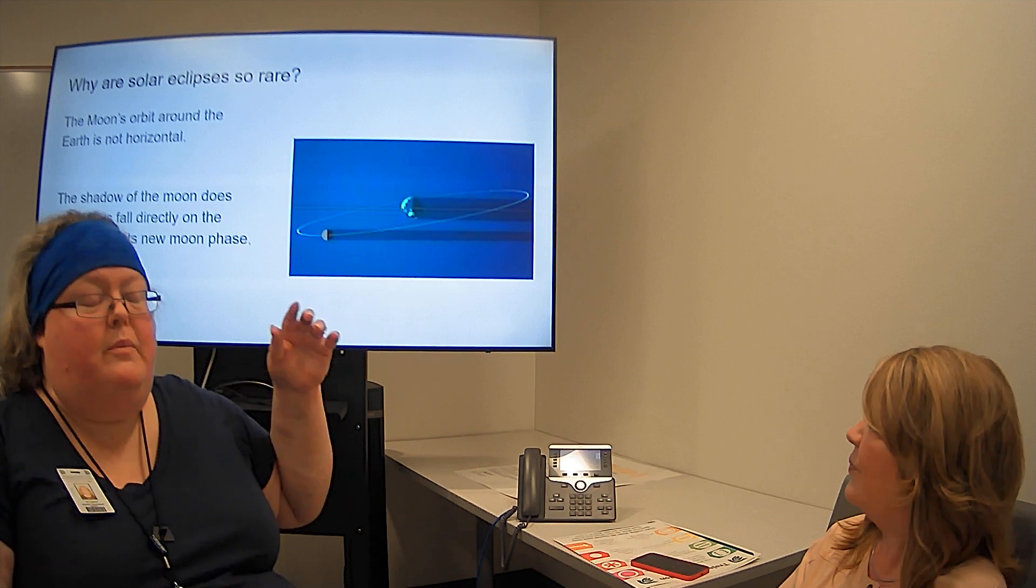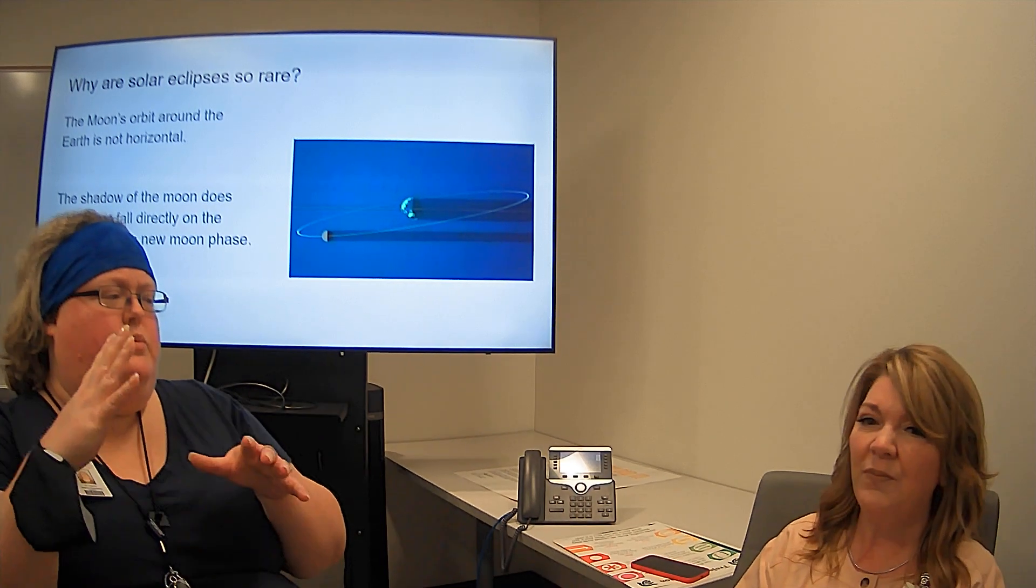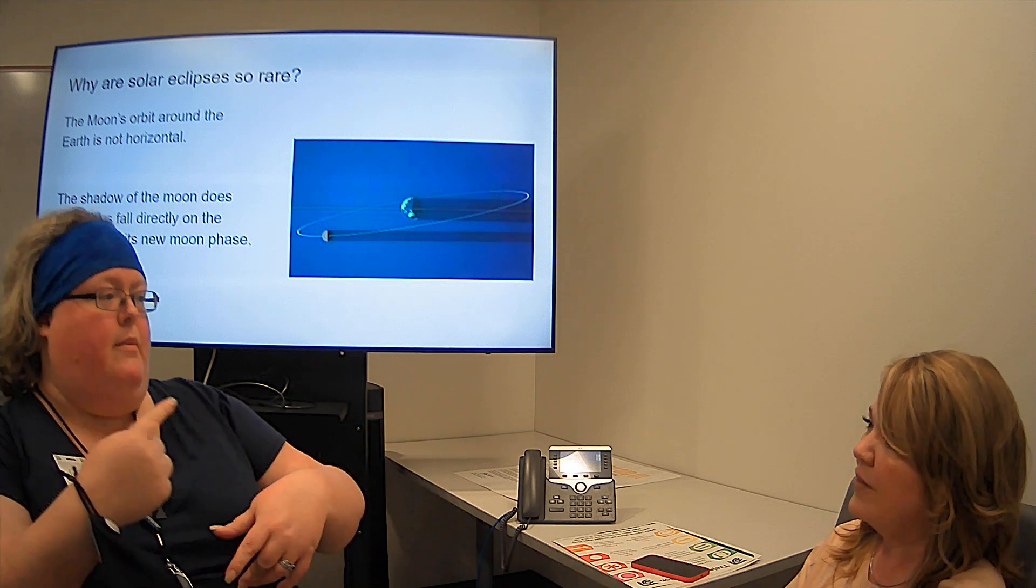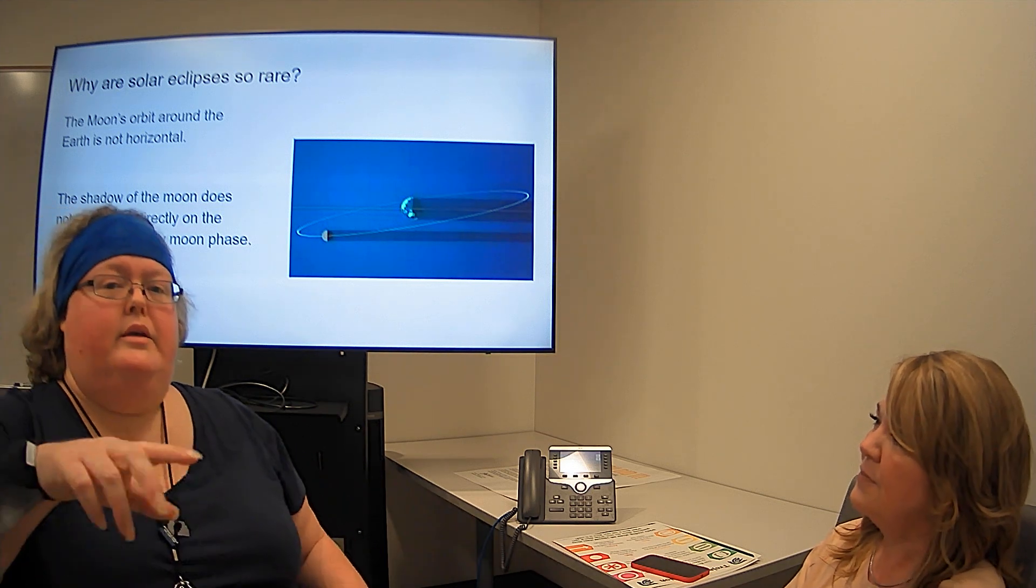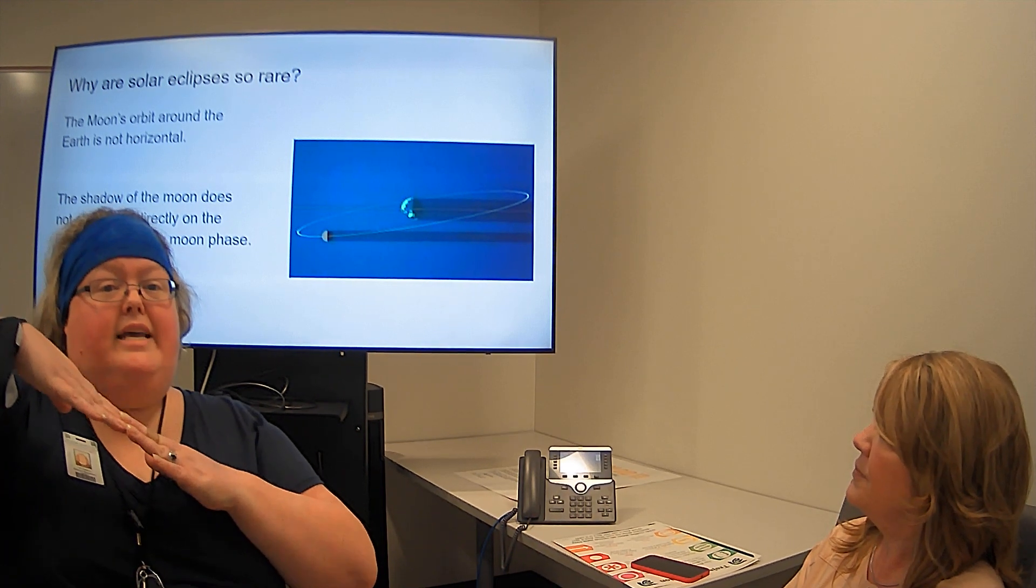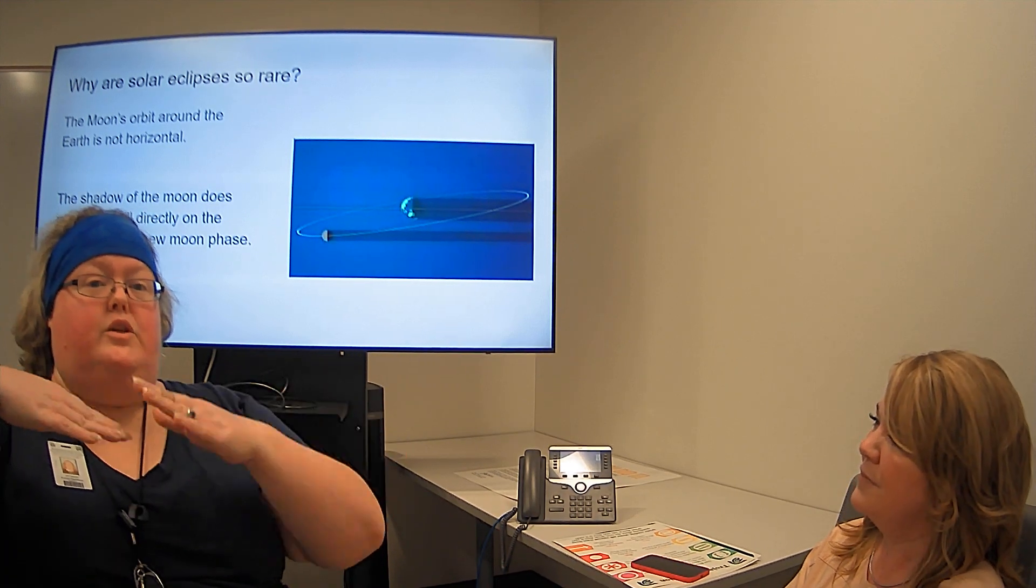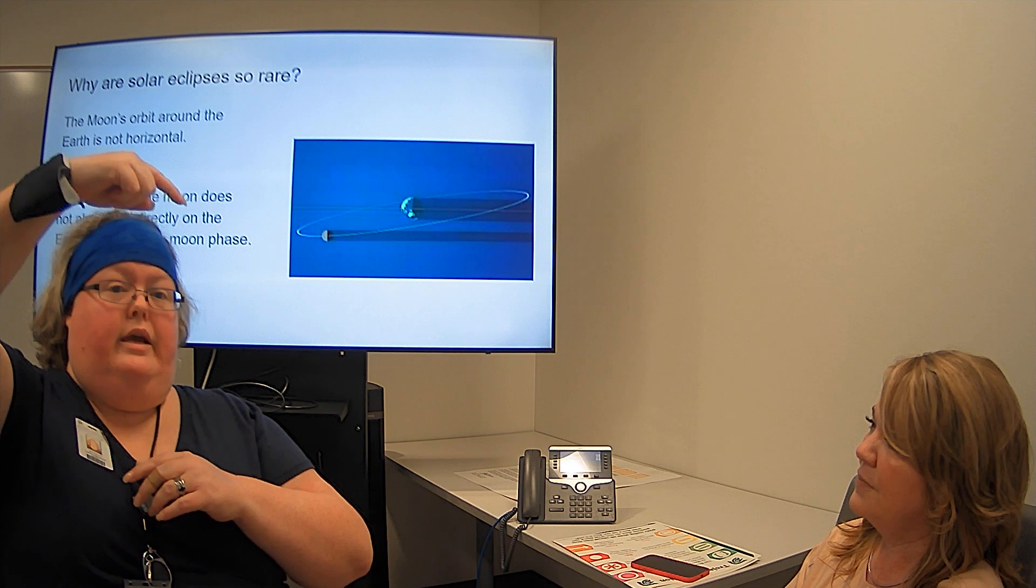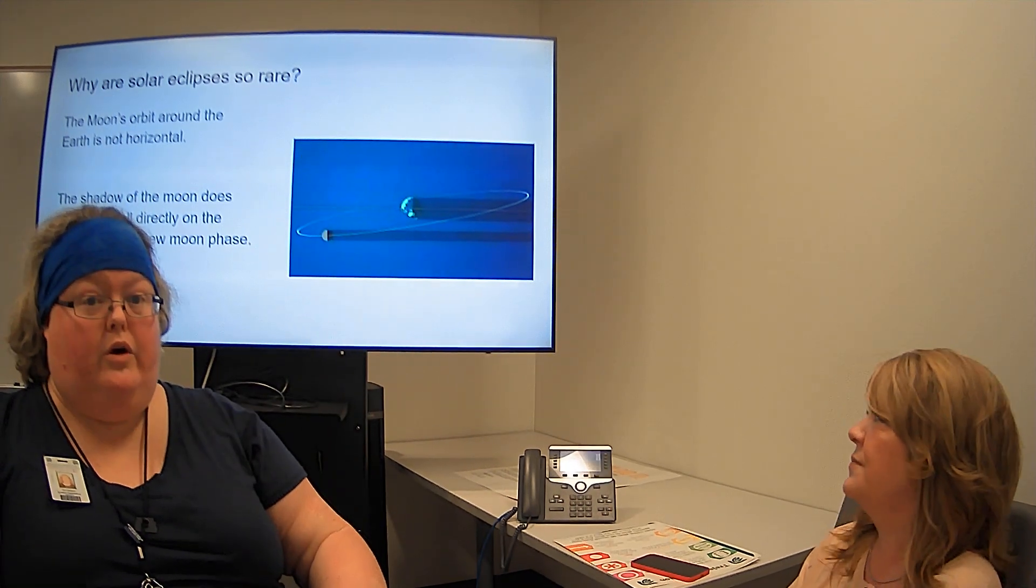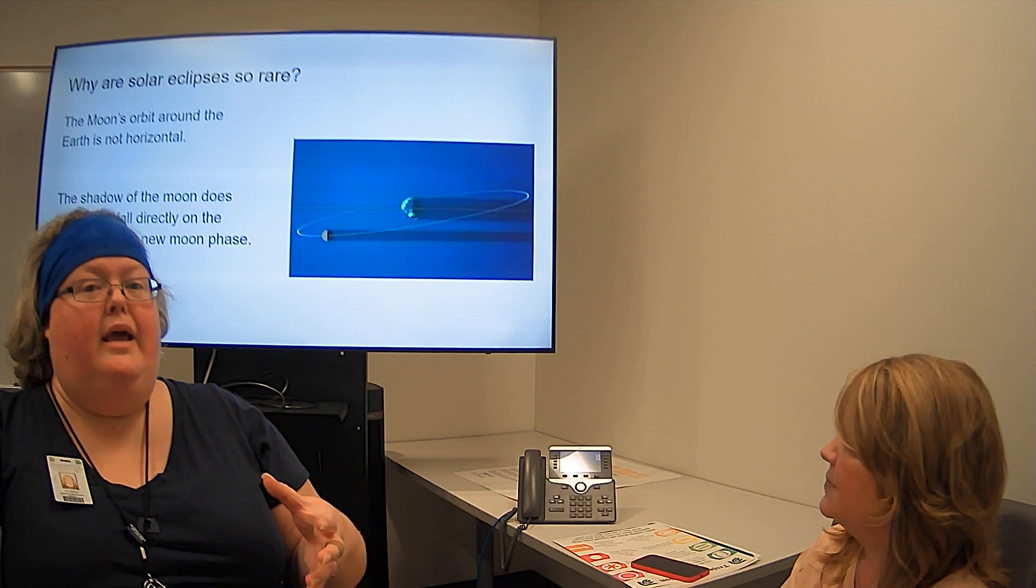Now the reason it's so rare, a lot of people are under the impression that if it's when the moon blocks out the sun, we should see that once a month. The problem is the moon's orbit is not flat. It's not in the same plane as the sun. So a lot of the time when the moon is in front of the sun, the shadow passes over the earth or below the earth. So this doesn't happen all the time.